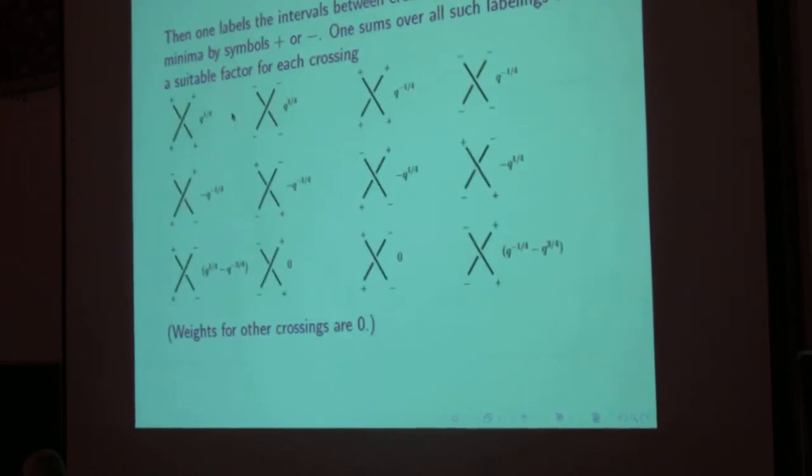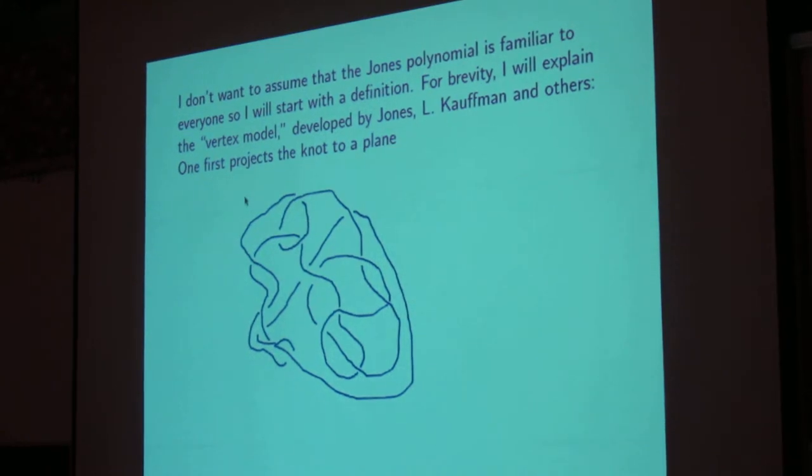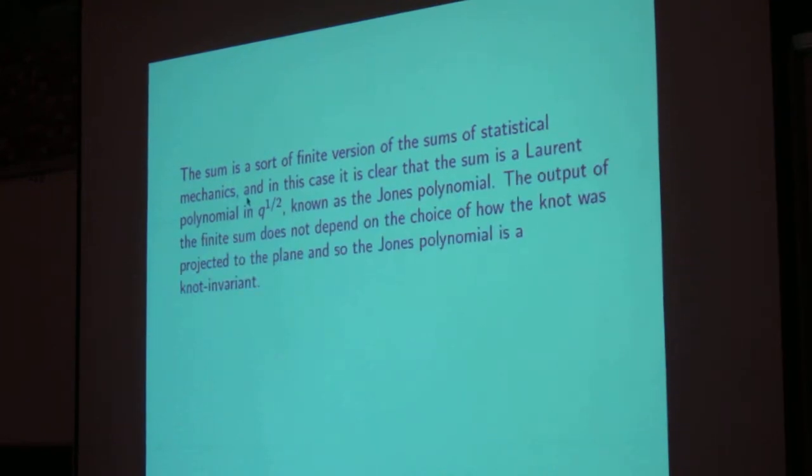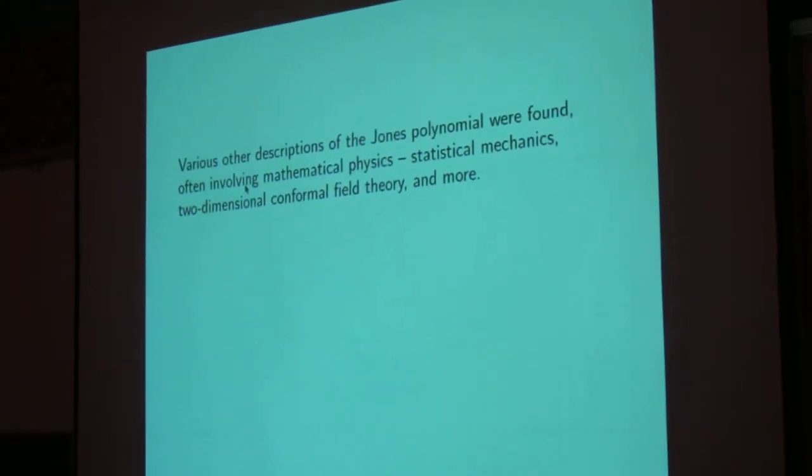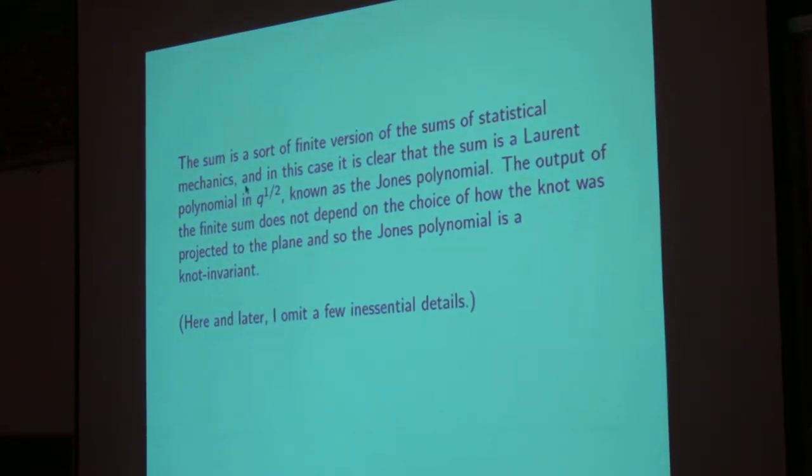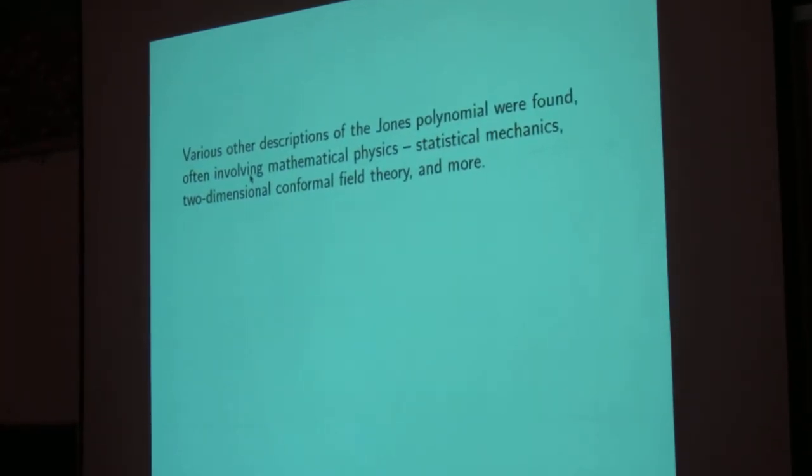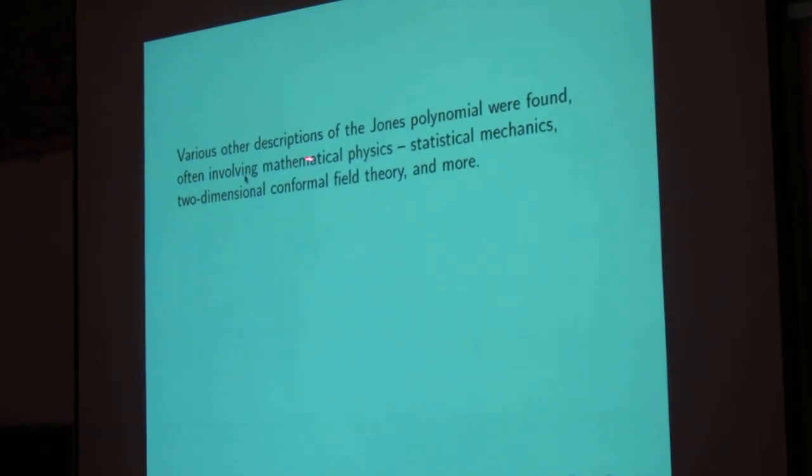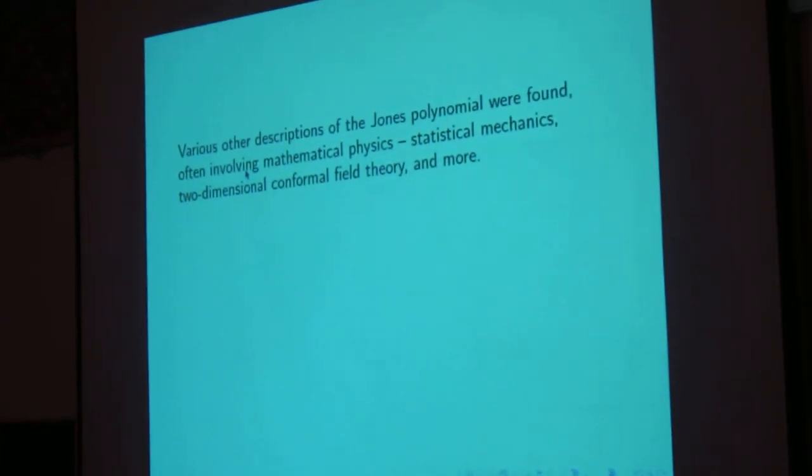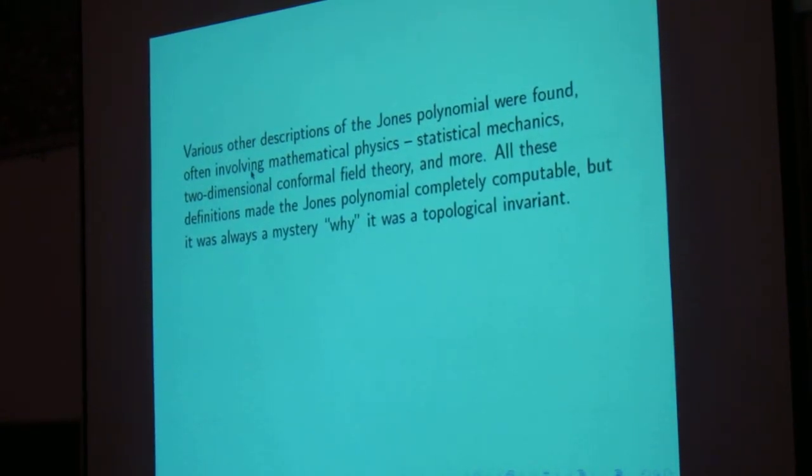So this way of defining the Jones polynomial is completely not obvious in its nature. We have a three-dimensional knot, we project it to the plane, we do this crazy discrete statistical mechanics, and after adding 2 to the 30 terms we get an answer which is a function of q but doesn't depend on exactly how we projected it to the plane. So Jones discovered this about 30 years ago, and soon after a lot of closely related descriptions were found, which often involve mathematical physics, statistical mechanics, two-dimensional conformal field theory, and more.